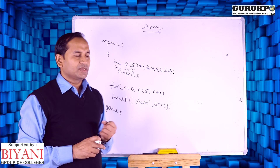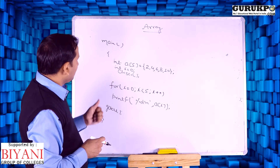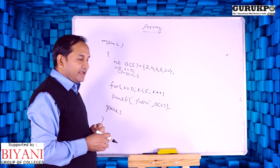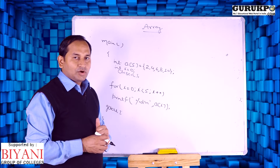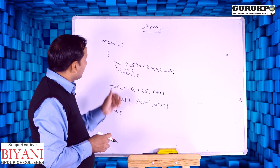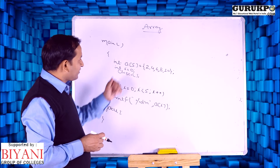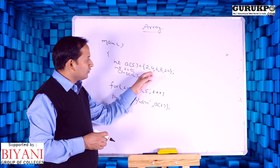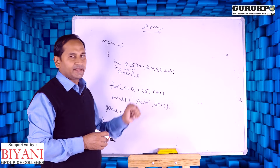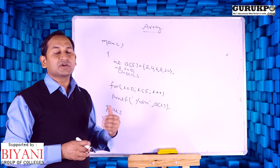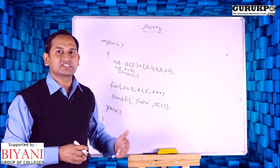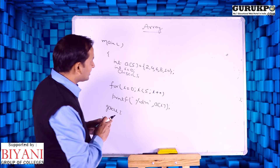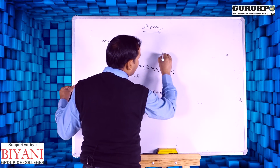We are taking an example of an array. We have an integer type array which contains 5 elements. The values of the array are 2, 4, 6, 8, and 10. According to the definition, all values are stored in sequential memory locations. Now we can discuss the memory map of this array.